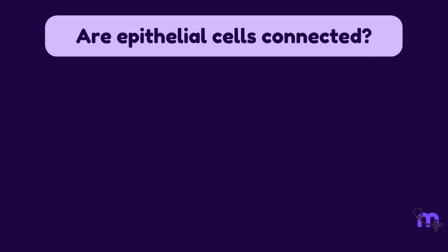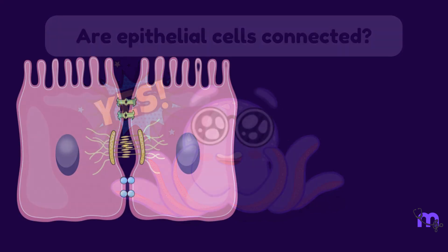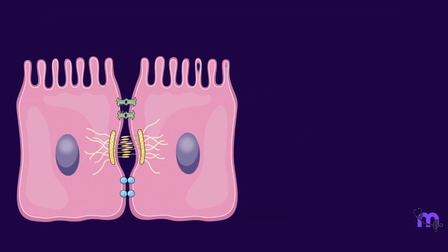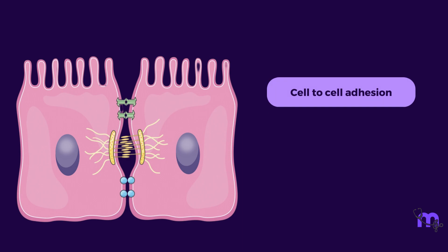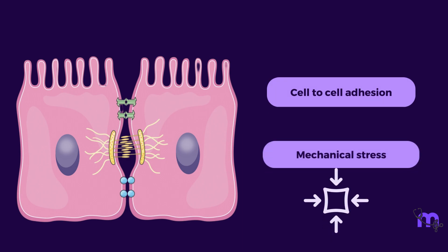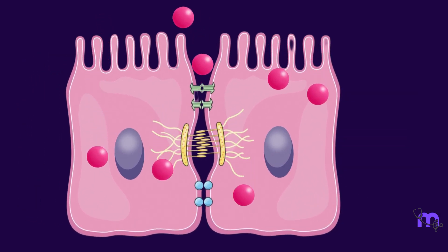Are epithelial cells connected? Yes, they are and this is of great significance. Not just are they connected but their bond is very rigid because of the presence of desmosomes which are cell-to-cell adhesions that are seen in all areas subjected to high mechanical stress like the epithelia. This is to ensure that the transfer of substances happens through the cell and not between adjacent cells.